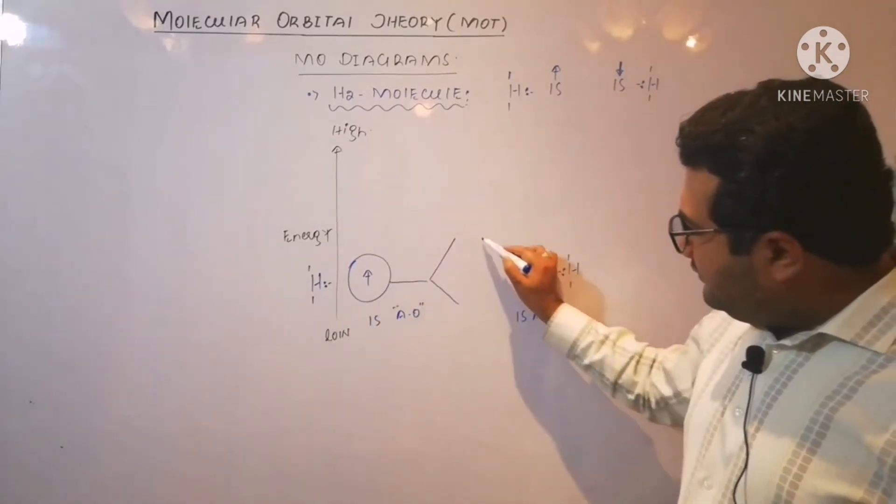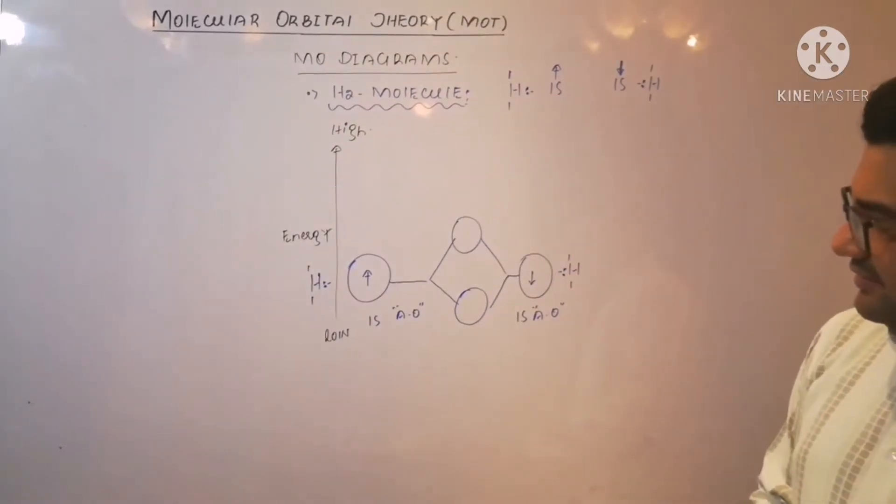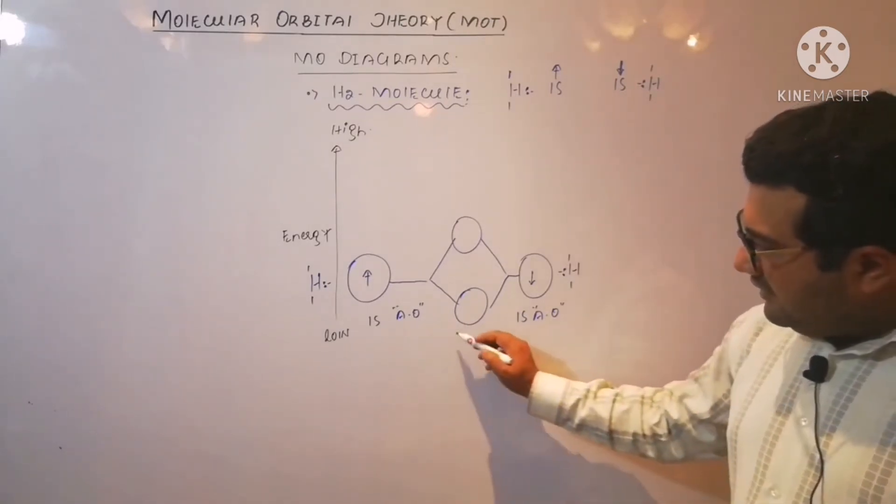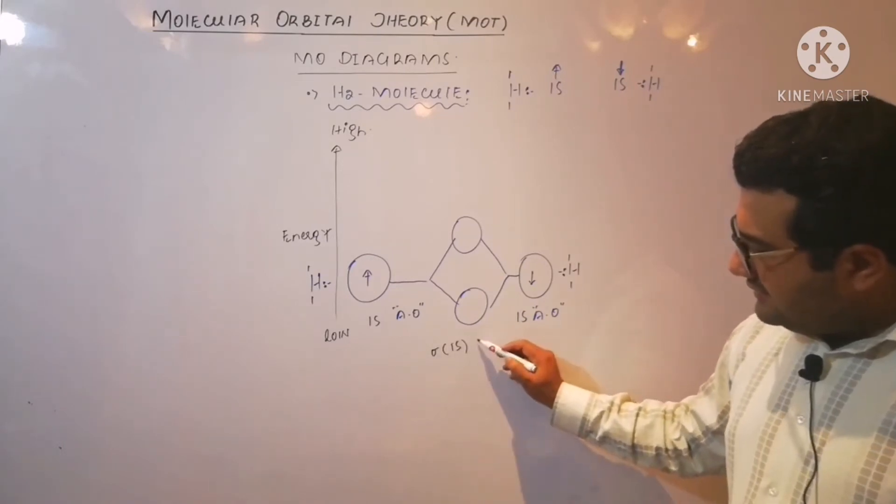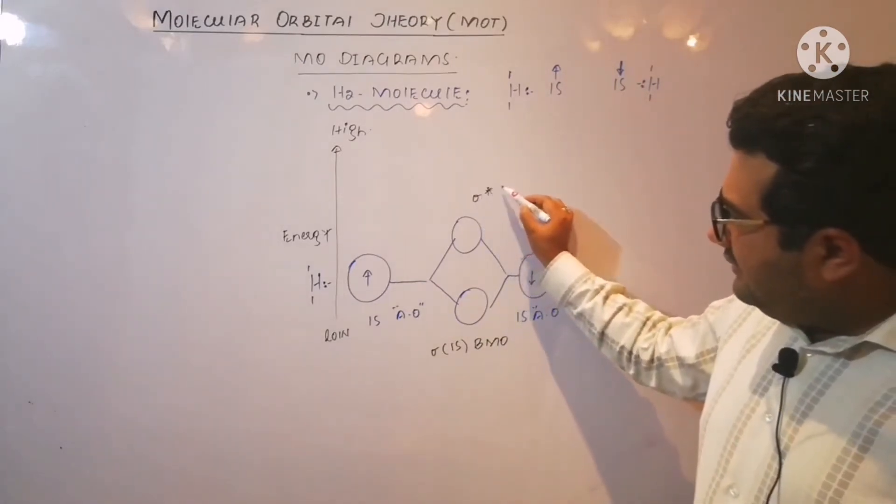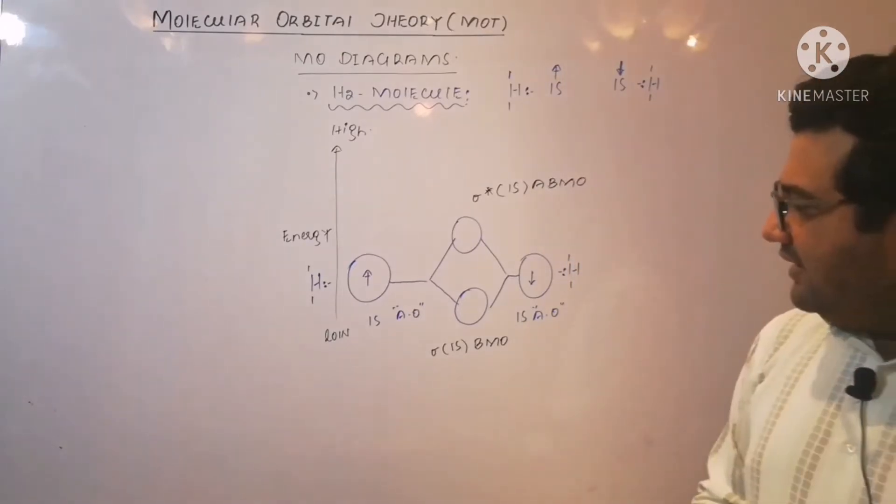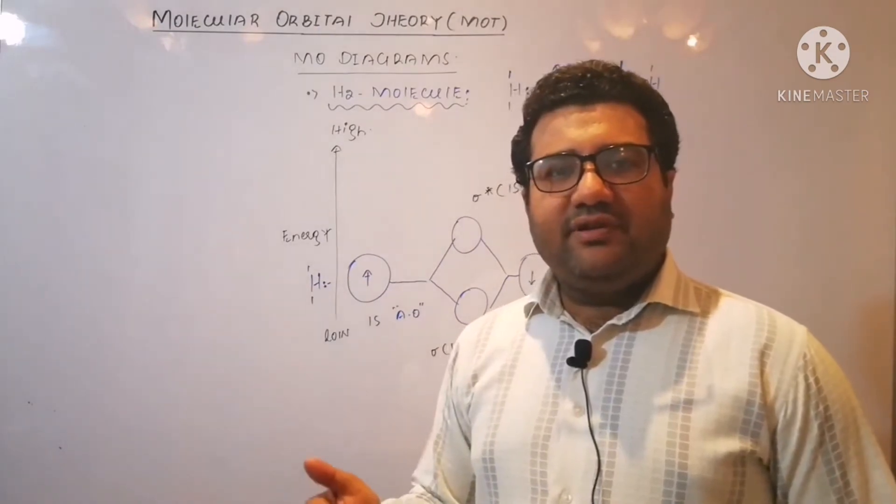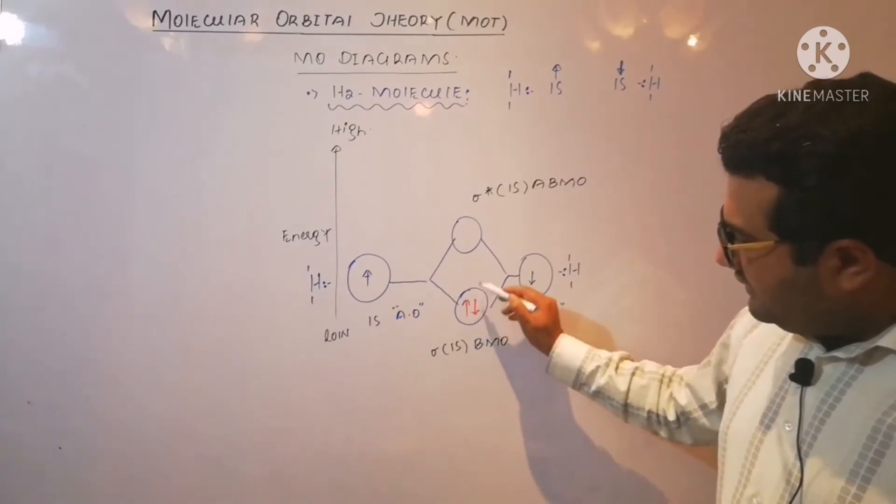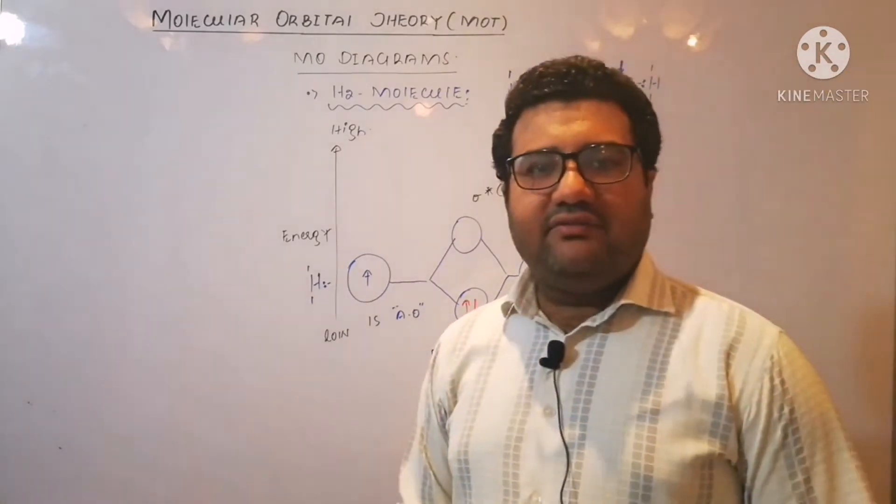When they overlap, they will form two molecular orbitals: one in the low energy and second in the high energy. Because s always shows end-to-end overlap, so it will be sigma 1s bonding molecular orbital, and this one will be sigma star 1s anti-bonding molecular orbital. According to the Aufbau principle, the electrons will be filled first in the low energy. So both electrons with the opposite spin will be filled in this low energy bonding molecular orbital, while anti-bonding molecular orbital will remain empty.